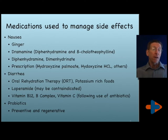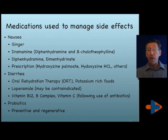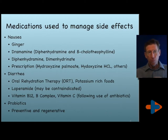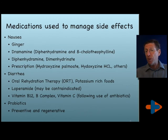Nausea can be a side effect of antibiotic use, particularly macrolides. Ginger can help with this. Also, over-the-counter medications like Dramamine, which is dimenhydrinate — diphenhydramine and 8-chlorotheophylline — and diphenhydramine alone, or prescription hydroxyzine, an antihistamine H1, are all beneficial. For diarrhea, oral rehydration with soups and liquids is good. Potassium-rich foods are very beneficial, and loperamide, which is over-the-counter, can be used for serious diarrhea.